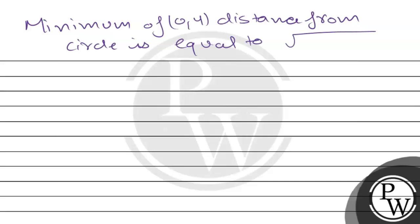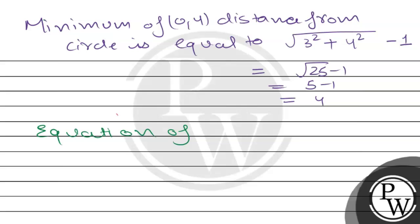The minimum distance from the point (0, 4) to the circle is calculated as follows. The distance from center (3, 0) to point (0, 4) is the square root of (3 minus 0) squared plus (0 minus 4) squared, which equals the square root of 9 plus 16, equals square root of 25, equals 5. Since the radius is 1, the minimum distance from (0, 4) to the circle is 5 minus 1 equals 4.